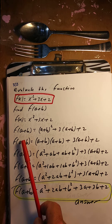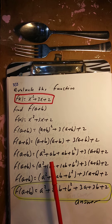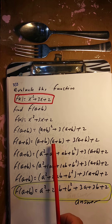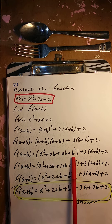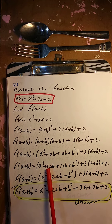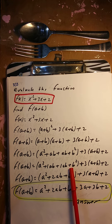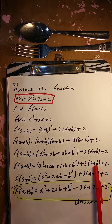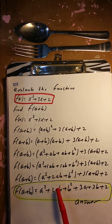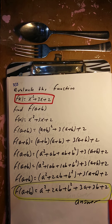Evaluate f of a plus b. Put a plus b in for the x's. a plus b squared means a plus b times a plus b. a times a is a squared, a times b is ab, b times a is ab, b times b is b squared. So that's a squared plus 2ab plus b squared. Then 3 times a plus b is 3a plus 3b, plus 2. So f of a plus b is a squared plus 2ab plus b squared plus 3a plus 3b plus 2.